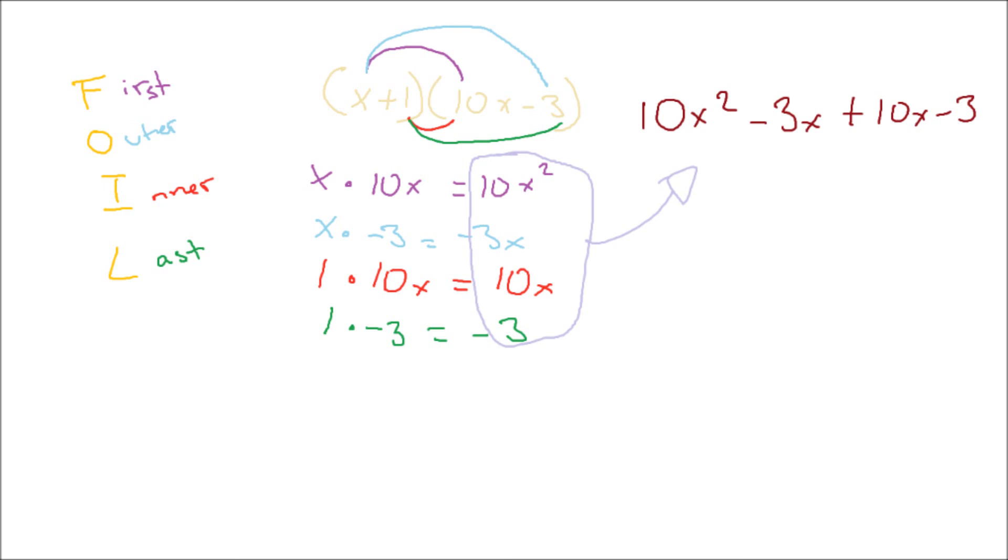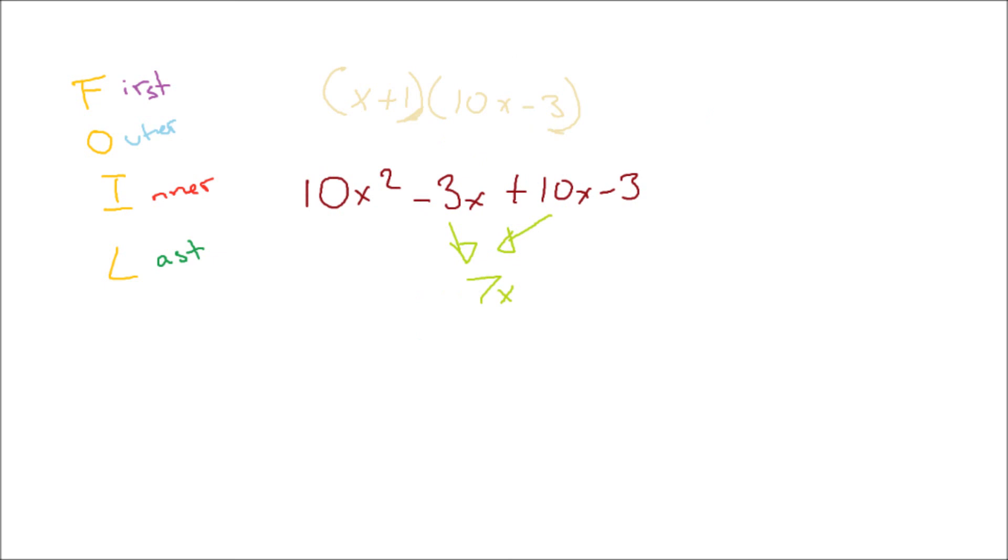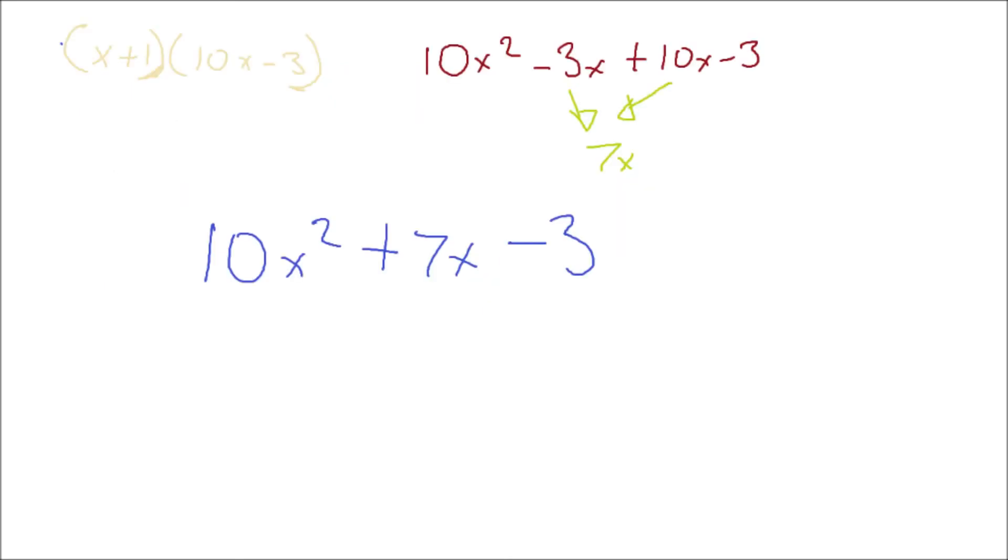As you can see, the answers, 10x squared, negative 3x, 10x, and negative 3, should look a bit familiar. If you rearrange them, you're back to the equation after you separated the 7. The last step is now to recombine negative 3x and 10x back into the 7x. And, voila, you've got your original question back.